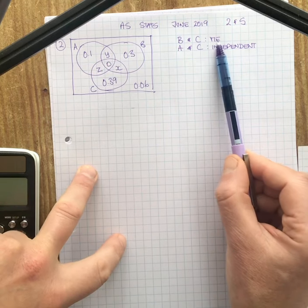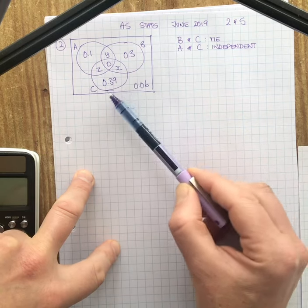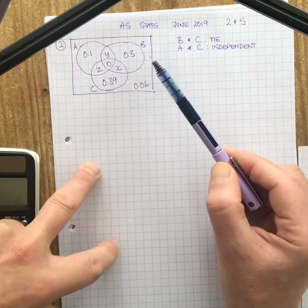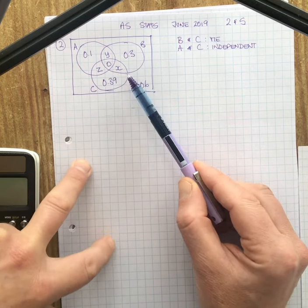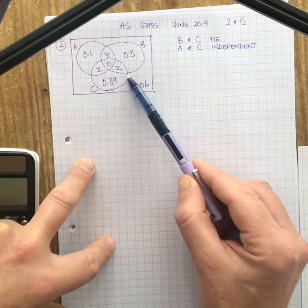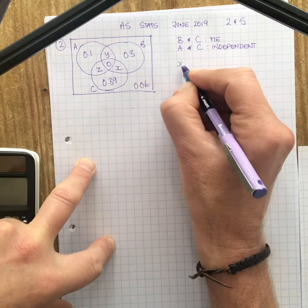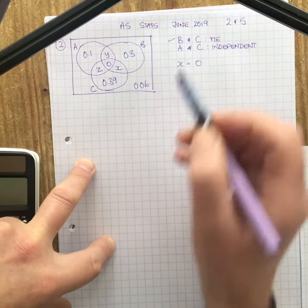Well let's start with B and C being mutually exclusive. B and C are mutually exclusive. There's no crossover. That's what that means. They don't overlap. At least any values that are in the overlap region in the intersection must be zero. So therefore this whole bit here must be zero. X is therefore zero. So that's the mutually exclusive bit done.